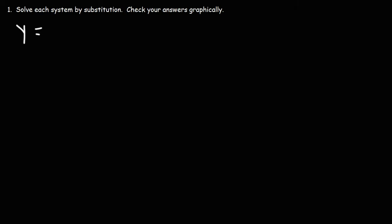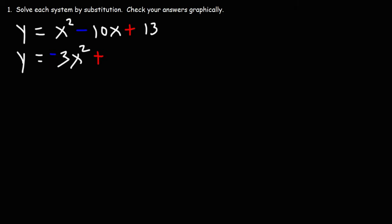Let's try another example. We have y equals x squared minus 10x plus 13, and also y equals negative 3x squared plus 14x minus 7. So now we have a system of two quadratic equations. Go ahead and solve this system using substitution, just like we did in the last problem, and then check your answers graphically.